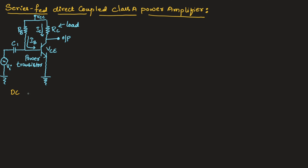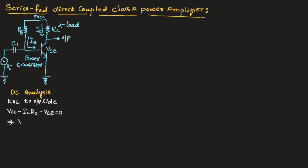Now, let us understand the DC analysis. Applying KVL to the output side, we can write VCC minus IC·RC minus VCE is equal to 0. Therefore, VCC is equal to IC·RC plus VCE. This is the expression for VCC.